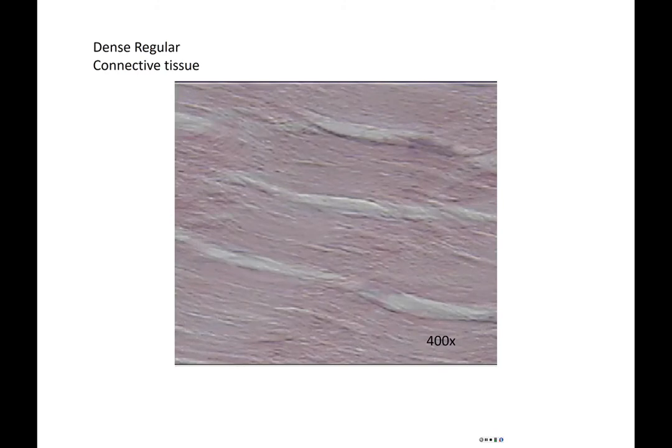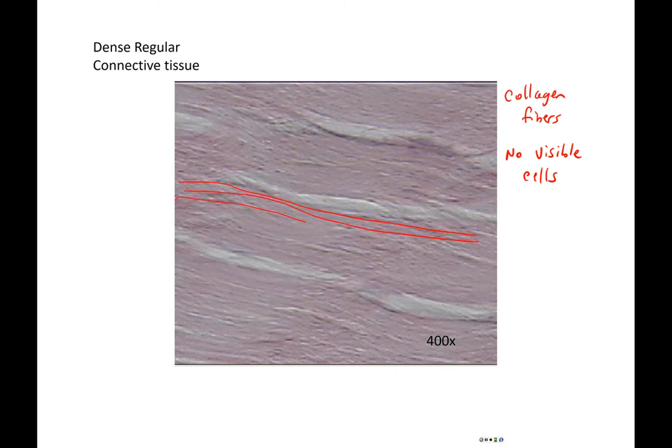Your dense regular connective tissue you can see is dominated by collagen fibers. You have a few if any visible cells. So you're seeing basically your fibers are running in a parallel direction throughout the whole screen here. Our ligaments and tendons are composed of dense regular connective tissue.